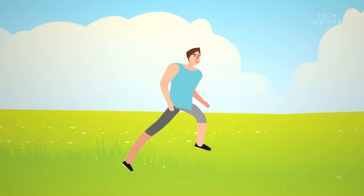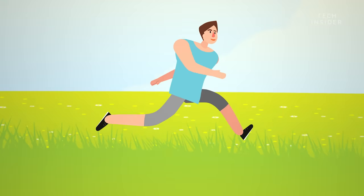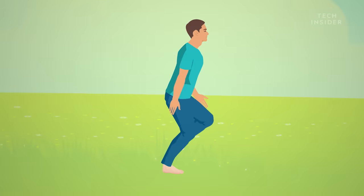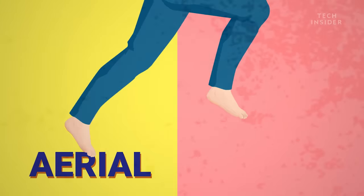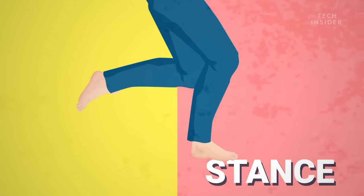The mechanics of our running stride also makes us particularly well-suited for endurance running. A human's running gait has two main phases. Aerial, when both feet are off the ground, and stance, when at least one foot touches the ground.